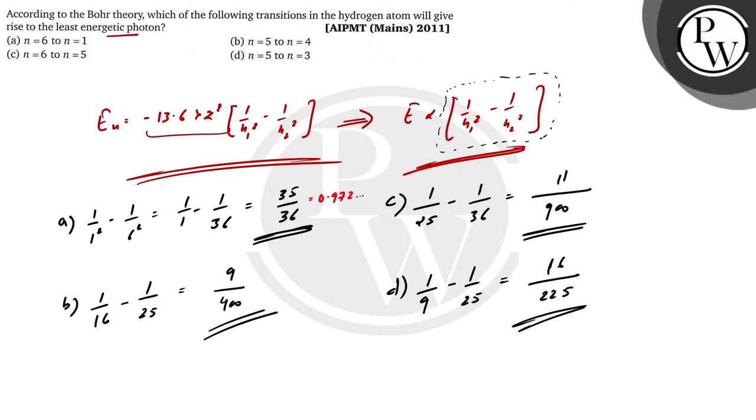If you see the other one, 9 upon 400, this value is 0.0225.